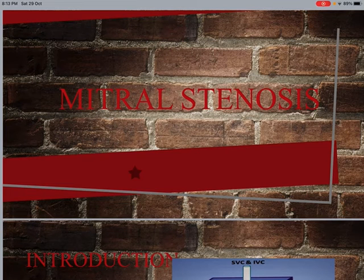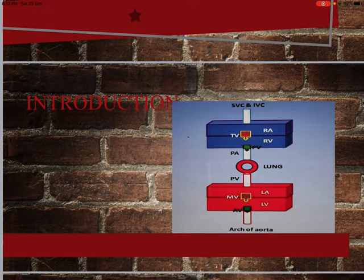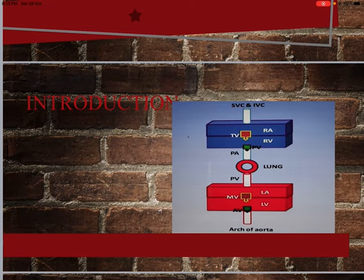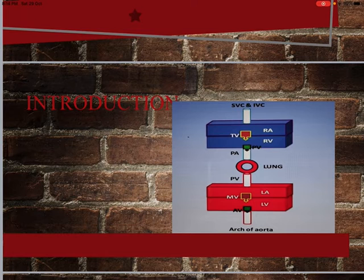Today we will see about mitral stenosis. Before going to mitral stenosis, we should know the cardiac cycle. Blood is received from the superior and inferior vena cava to the right atrium, which sends blood through the tricuspid valve to the right ventricle. The right ventricle sends blood through the pulmonary artery to the lungs to oxygenate it. Oxygenated blood enters the left atrium through the pulmonary veins.